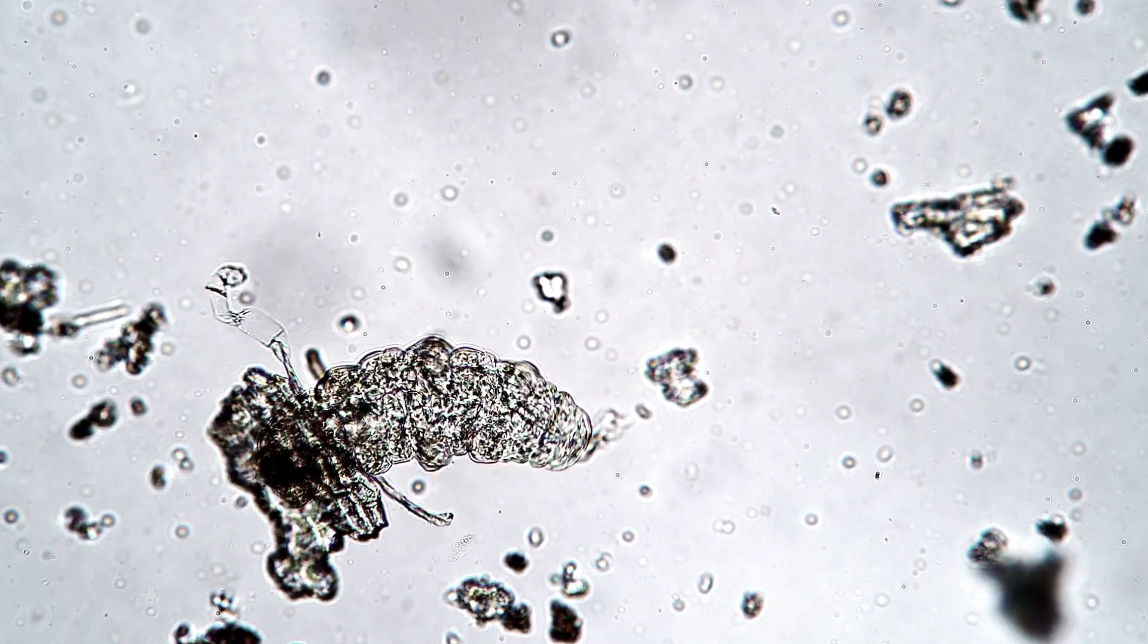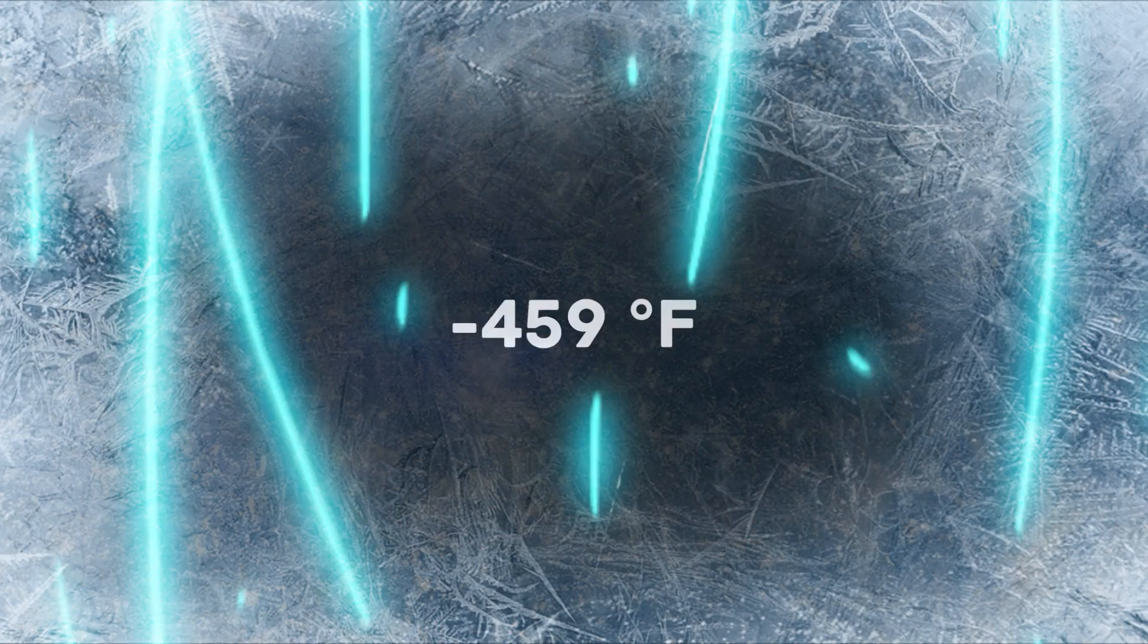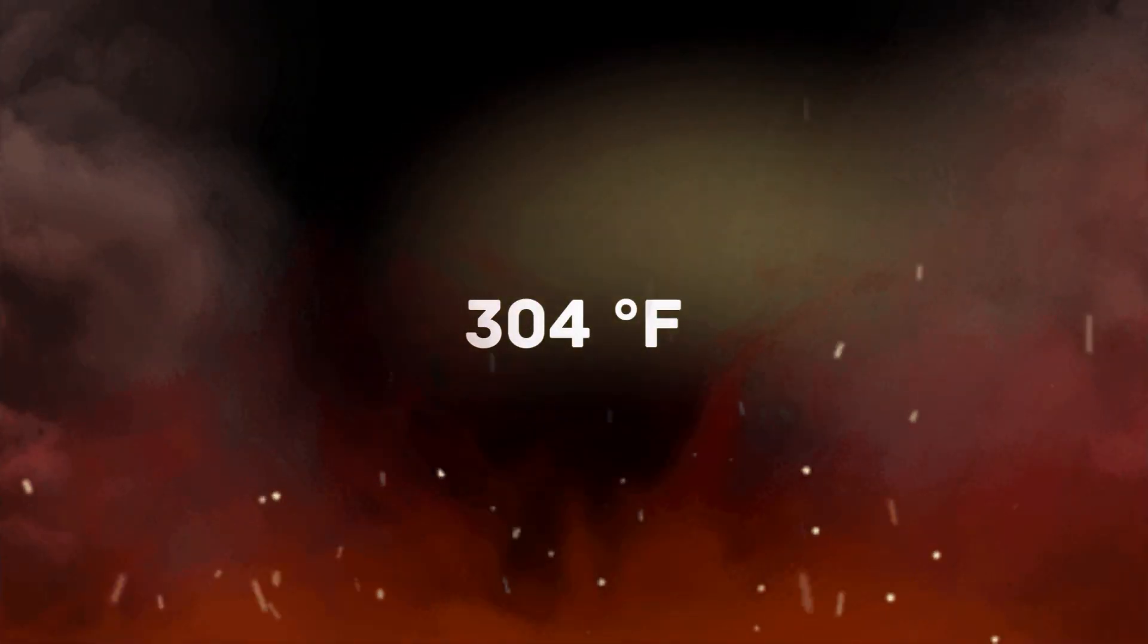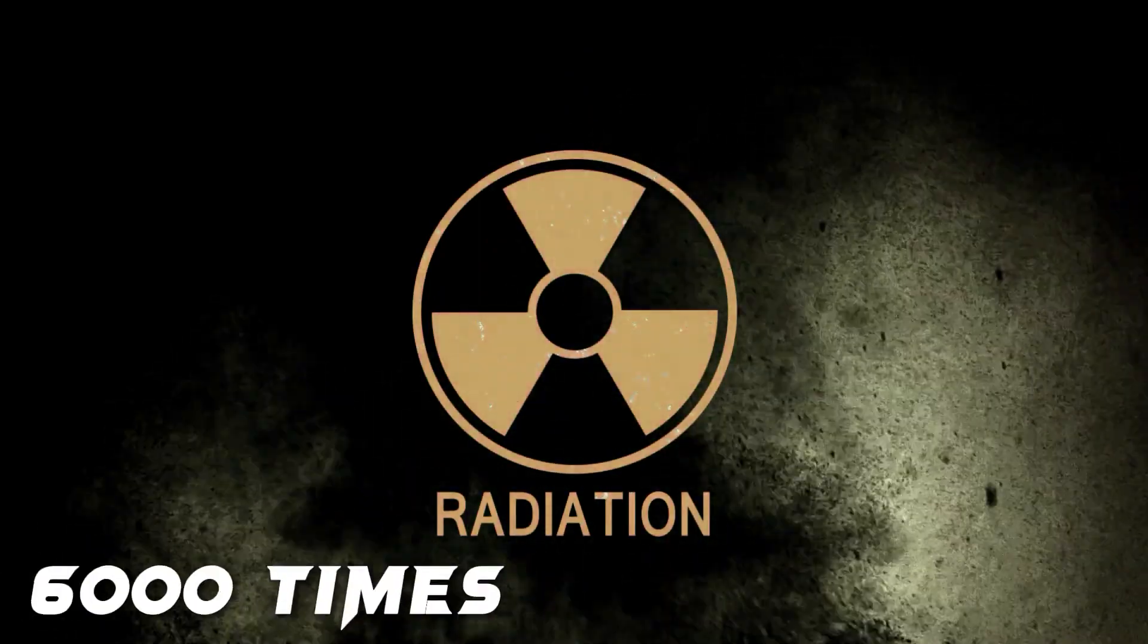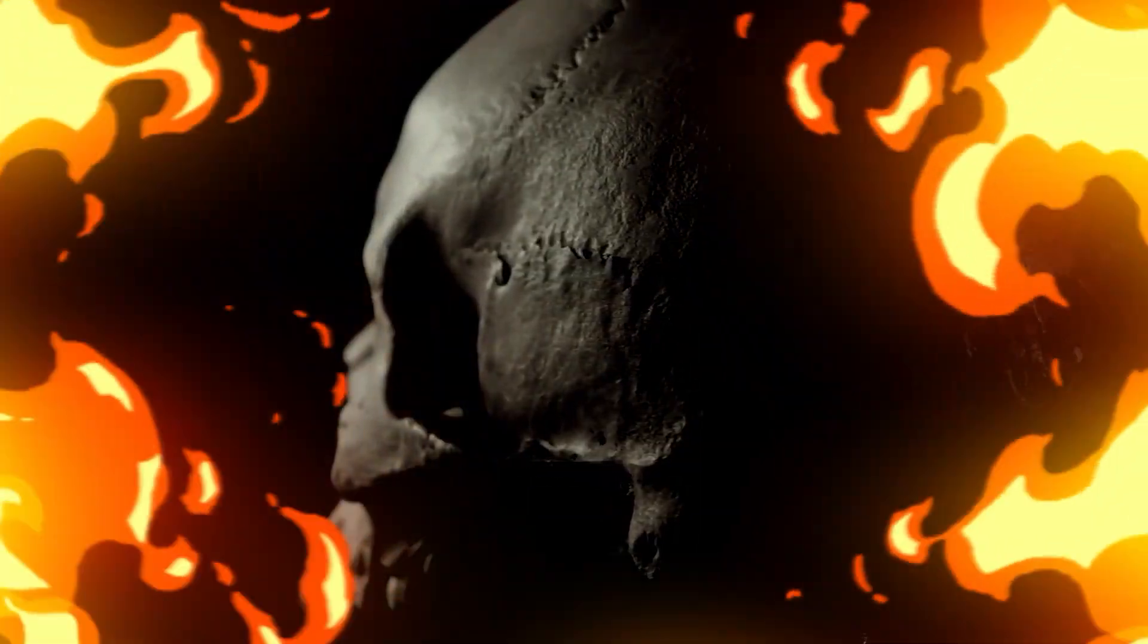Tardigrades are tiny creatures that can survive without food or water for up to 30 years. They can also survive temperatures from negative 459 degrees Fahrenheit to 304 degrees Fahrenheit, and exposure to radiation up to 6,000 times the amount that would kill a human.